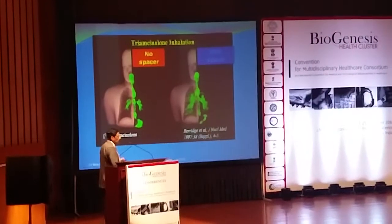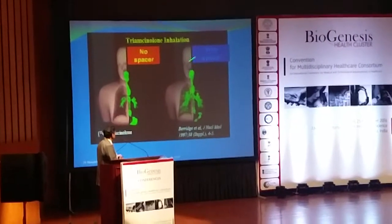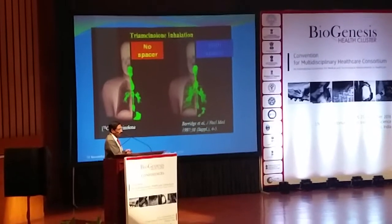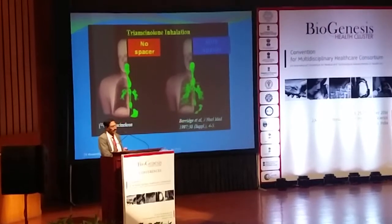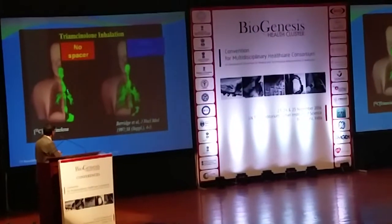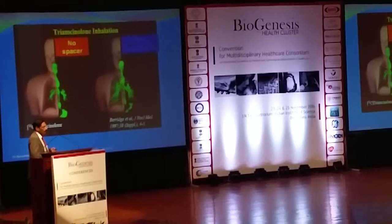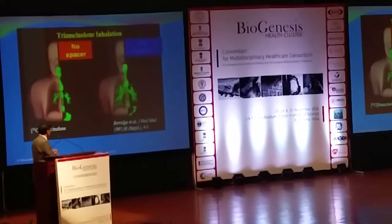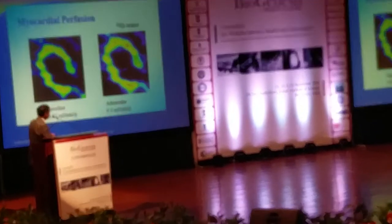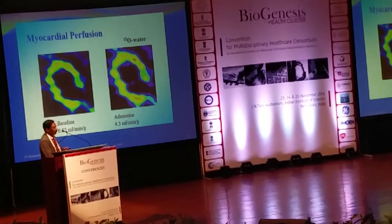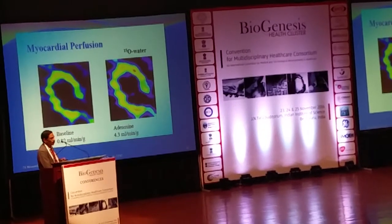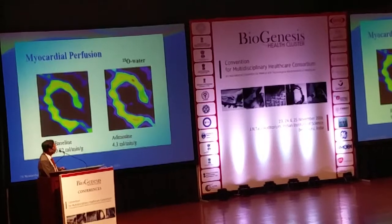For example, in bronchial asthma, when using a spacer device, the drug reaching the lung is greater compared to without a spacer. Spacers are recommended for patients with bronchial asthma to inhale corticosteroids. PET scan clearly demonstrates that the concentration of the drug is much greater when using the spacer device. Coming to adenosine and myocardial infarction — one can clearly demonstrate whether your drug is increasing blood flow into the myocardium using adenosine methods. If you have a drug for angina pectoris, you can very easily demonstrate whether it increases blood flow using PET scan.